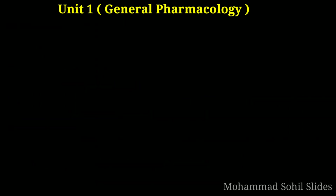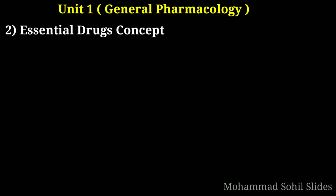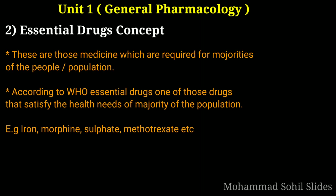Now moving to the next topic, that is the essential drug concept. Essential drugs are those medicines which are required for the majority of the people and population. According to WHO, essential drugs are those that satisfy the health needs of the majority of the population. WHO brought out a model list of essential drugs, revised from time to time; the current is the 20th list from 2017, which has 433 drugs and 25 fixed dose combinations (FDC). India produced its national essential drug list in 1996, revised in 2011 and 2015, with the title National List of Essential Medicines, including 376 medicines and 20 fixed dose combinations.